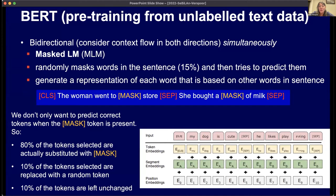We don't only want to predict correct tokens when there's a masked token present, so there's a training game in BERT to ensure that we can predict basically every word in the sentence. At the end of the day, we end up with a model that transforms the input sequence into a representation capturing the linguistic dependencies between words. It uses layers of embeddings both at the token level and at the position level to keep track of word order, plus segment embedding to capture two input sentences within a single input representation.